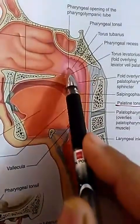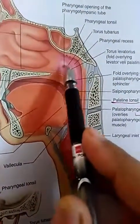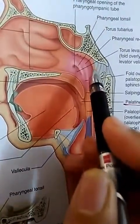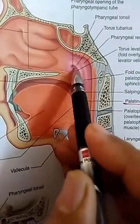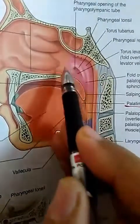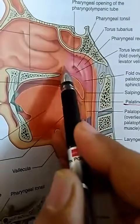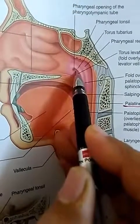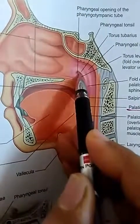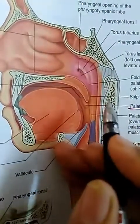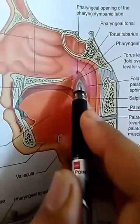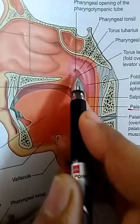The lateral wall of the nasopharynx is formed on either side by the Eustachian tube. This is the pharyngeal opening of the Eustachian tube into the nasopharynx. It lies approximately 1.25 centimeters — or about 10 to 15 mm — behind the posterior end of the inferior turbinate.